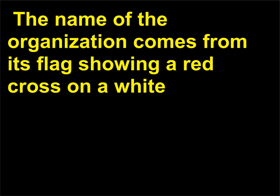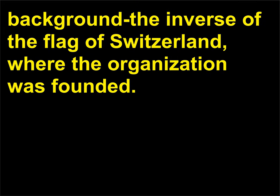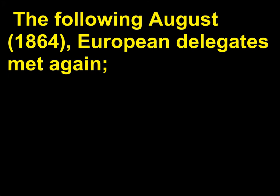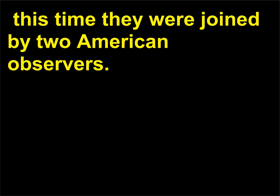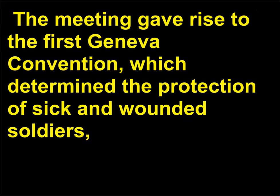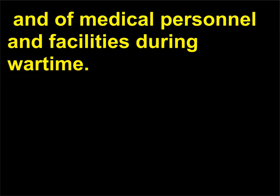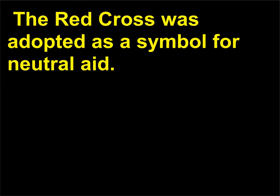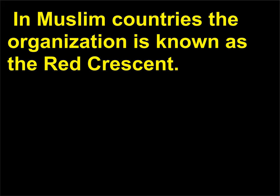The name of the organization comes from its flag showing a red cross on a white background — the inverse of the flag of Switzerland, where the organization was founded. The following August, 1864, European delegates met again, this time joined by two American observers. The meeting gave rise to the first Geneva Convention, which determined the protection of sick and wounded soldiers, and of medical personnel and facilities during wartime. The Red Cross was adopted as a symbol for neutral aid. In Muslim countries the organization is known as the Red Crescent.